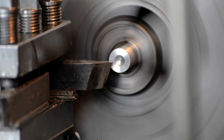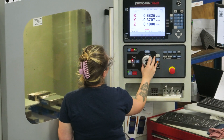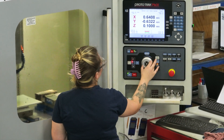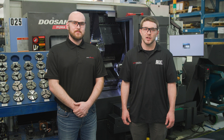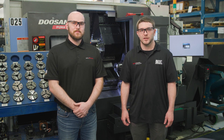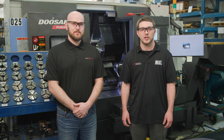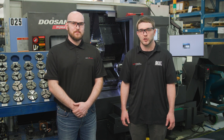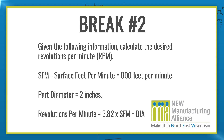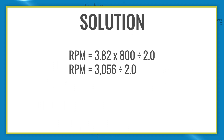Spindle speed will determine how fast the cutting edge of the tool will contact the work piece. Given the following information, calculate the desired revolutions per minute or RPM. The surface feet per minute or SFM we will use is 800 feet per minute, and our part's finish diameter is 2 inches. To find the RPM, use the constant 3.82 multiplied by the SFM value, divided by the part diameter. Our calculations show that the desired revolutions per minute will be 1,528 RPM.